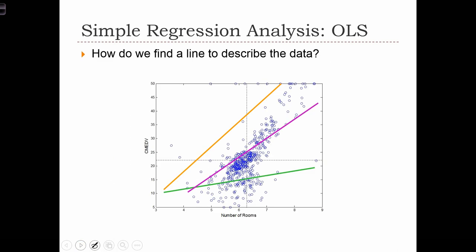But how do we actually know which line is the best line? Given a cloud of points, there's many different lines that we can actually fit through the data. So when we use regression analysis, we are going to be using a particular technique that's called ordinary least squares regression, or OLS.